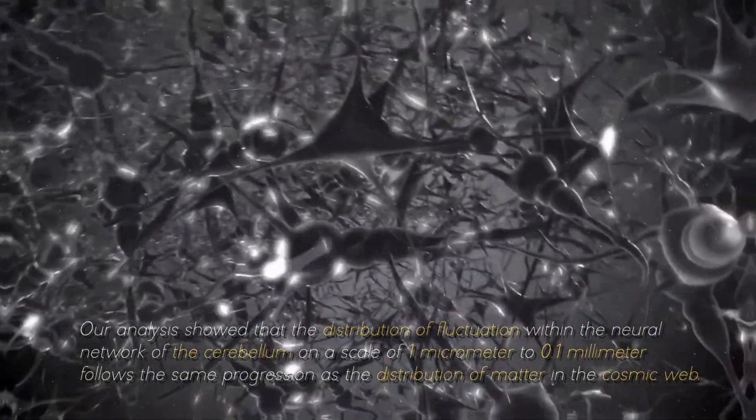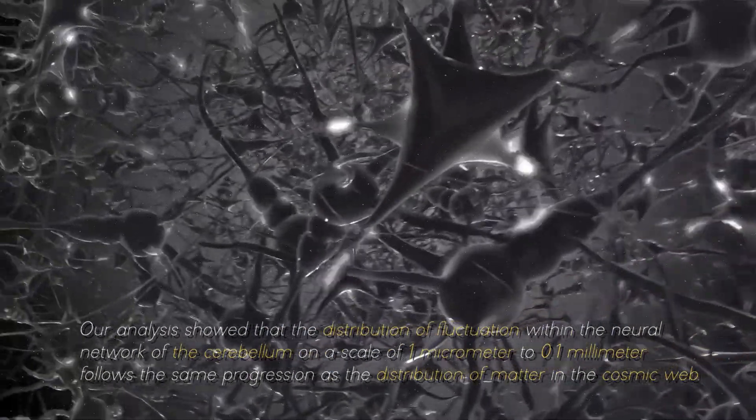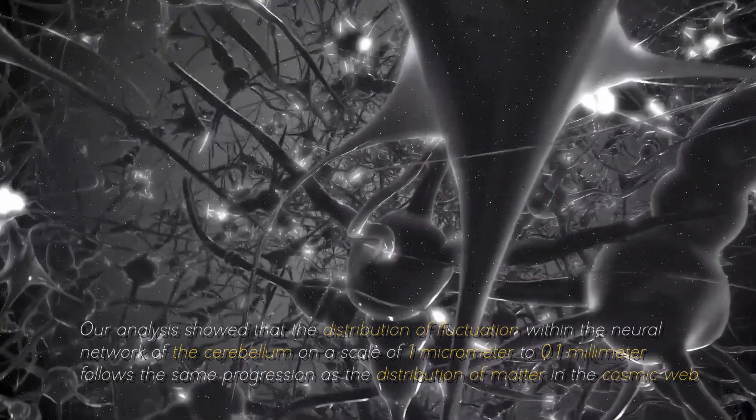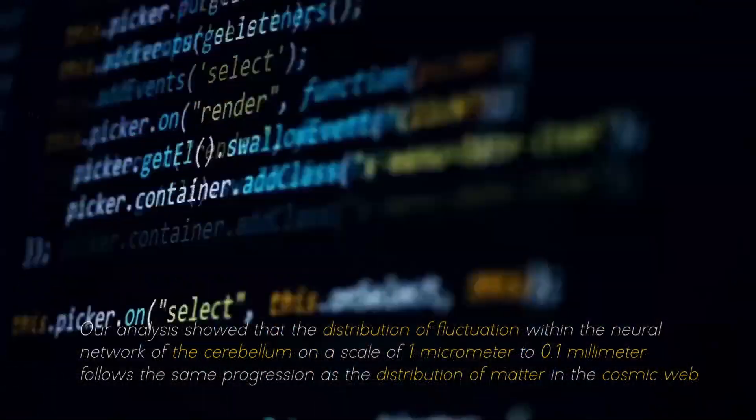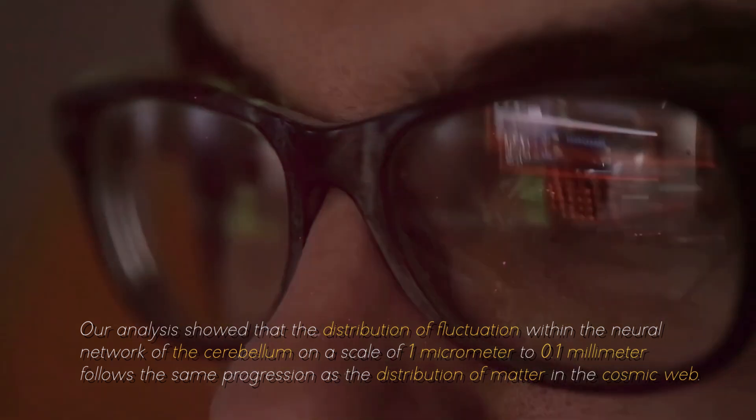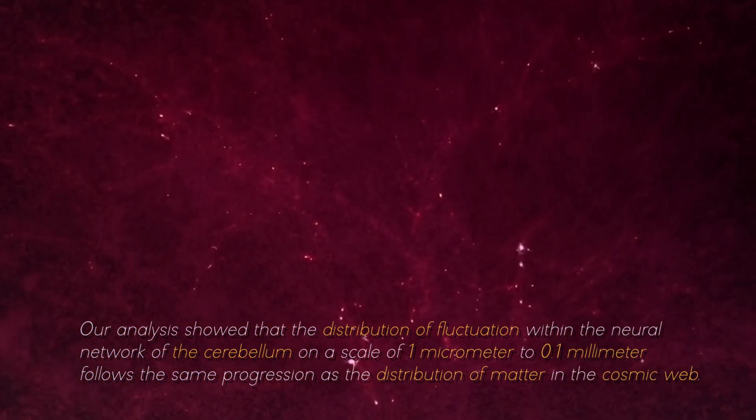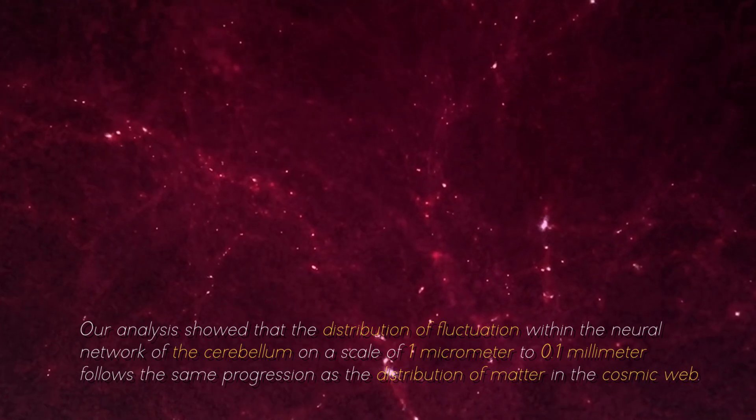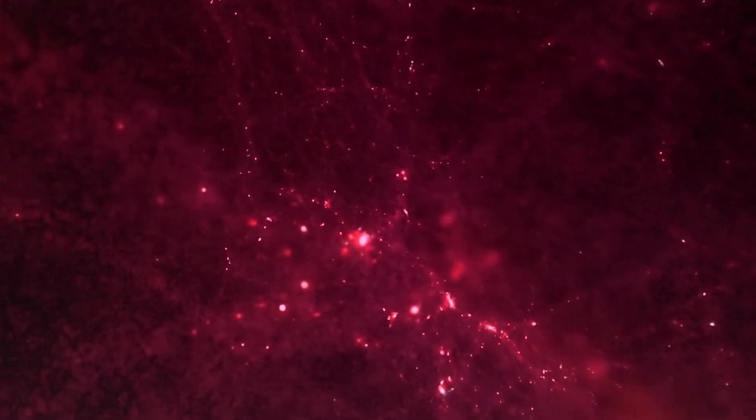Our analysis showed that the distribution of fluctuation within the neural network of the cerebellum on a scale of 1 micrometer to 0.1 millimeters follows the same progression as the distribution of matter in the cosmic web, commented one of the researchers in charge of this project.